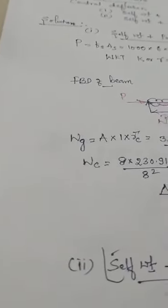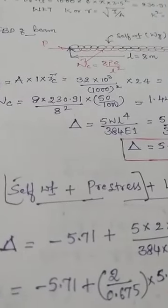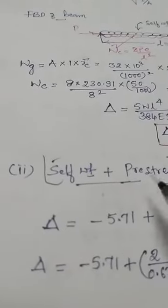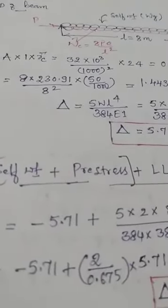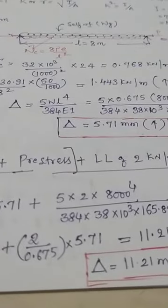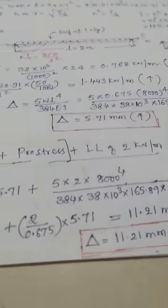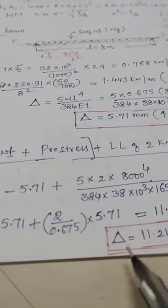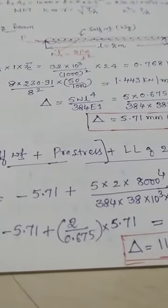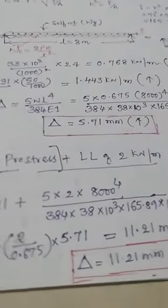For deflection due to self-weight, prestress, and external live load of 2 kN/m: the combined self-weight and prestress deflection is −5.71 mm (upward). The live load deflection uses 5WL⁴/(384EI) for 2 kN/m — you can calculate proportionally from the 0.675 value. The total deflection due to P, dead load, and live load is 11.21 mm downward, which is within the limit of L/250 = 32 mm.